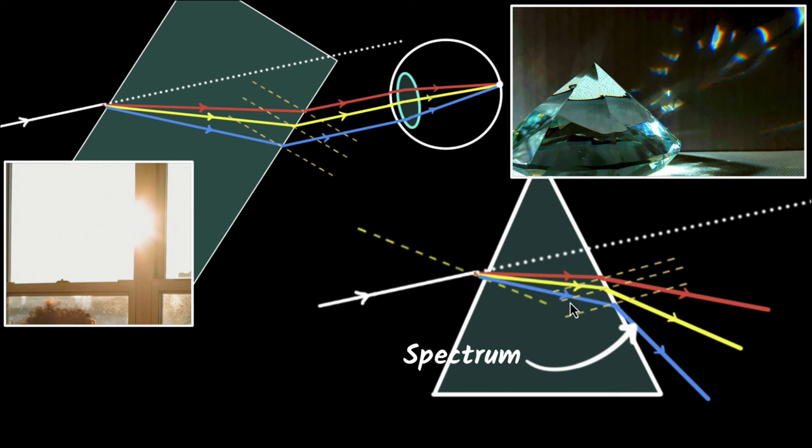So you see in a prism, you have dispersion and a spectrum, but in window panes and glass slabs, you have the dispersion, but you don't see the spectrum because the colors don't separate out. Okay. Now that we have that basics, let's see what happens in a rainbow.